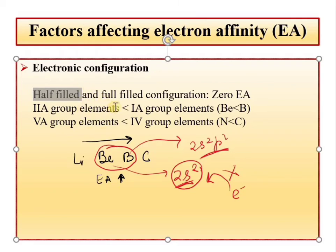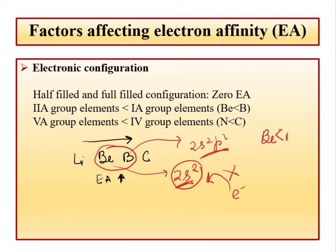This means the electron affinity for beryllium is less than expected — in fact, lower than that of boron — because it has fully filled orbitals. The periodic trend from left to right says EA should increase, but beryllium's fully filled 2s² configuration makes its EA essentially zero.